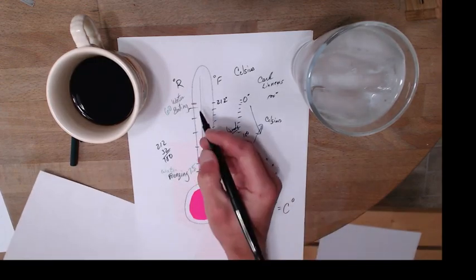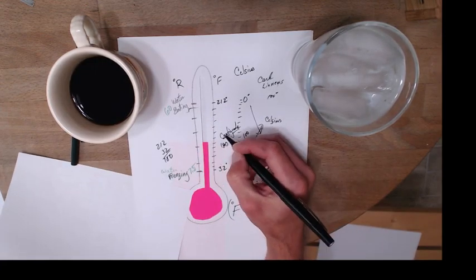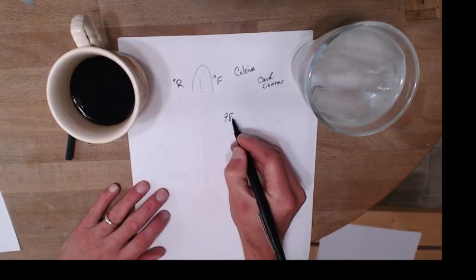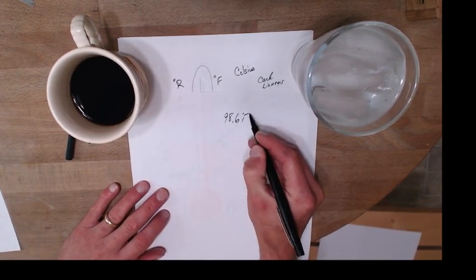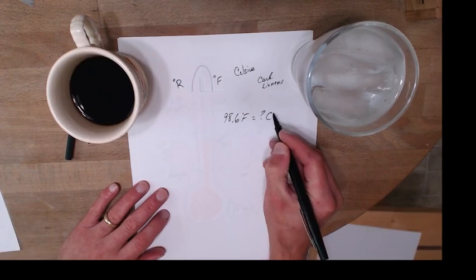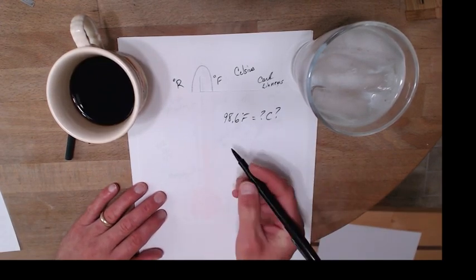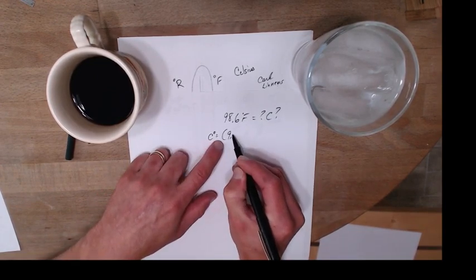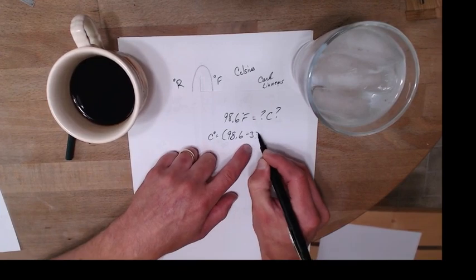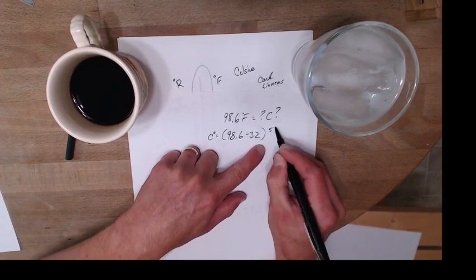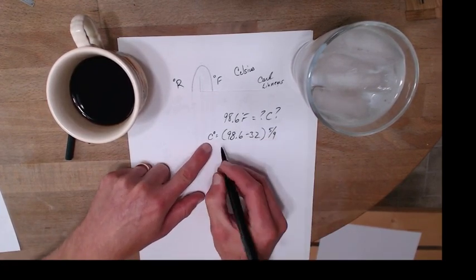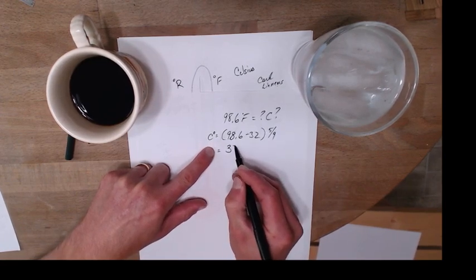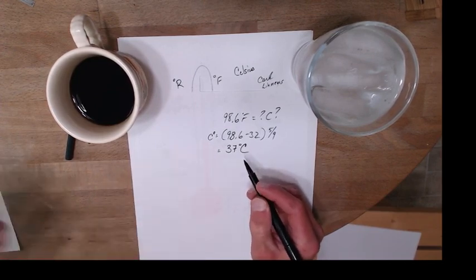So your body temperature is somewhere up here around 98.6 degrees Fahrenheit. What is that in Celsius? So my Celsius degree is going to be my Fahrenheit degree, 98.6, minus 32, times five-ninths. Then that turns into—you do a little bit of math—that turns into 37 degrees Celsius.